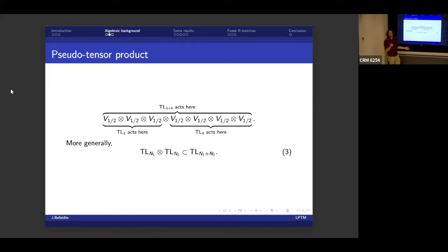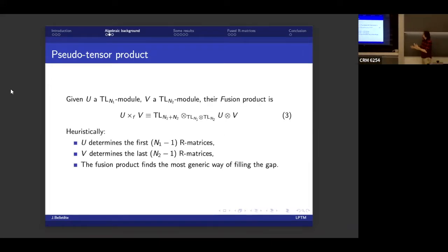However, what I can also do, I can say, well, I'm only going to look at the first three sites together, and then the four sites together. So I have TL_3 acting on the first half, and then TL_4 acting on the second. So what this is saying is that TL_3 tensored with TL_4 is a subalgebra of TL_7. And this generalizes very naturally to larger things. So if I take TL_{N_1} tensored with TL_{N_2}, it's a subalgebra of TL_{N_1+N_2}.